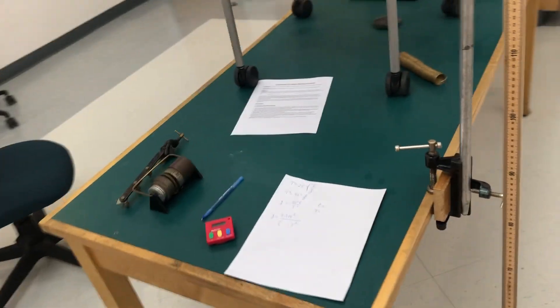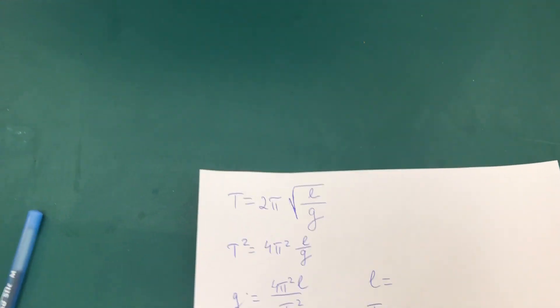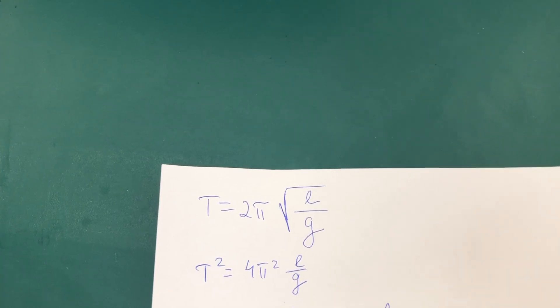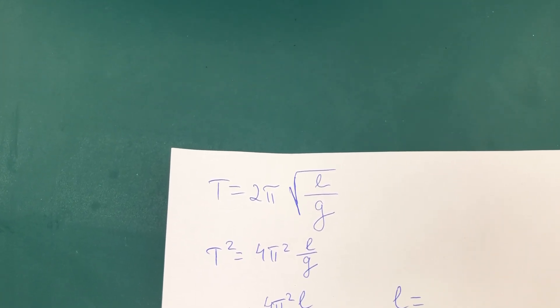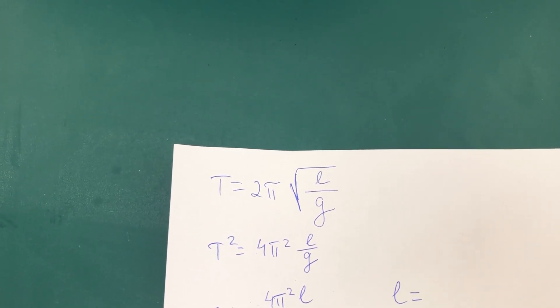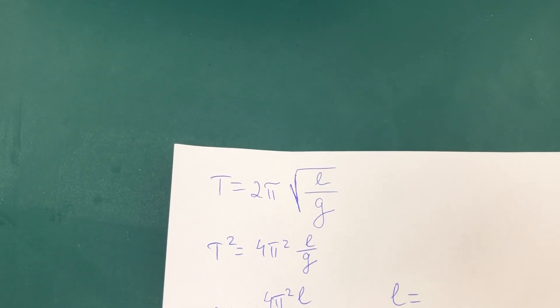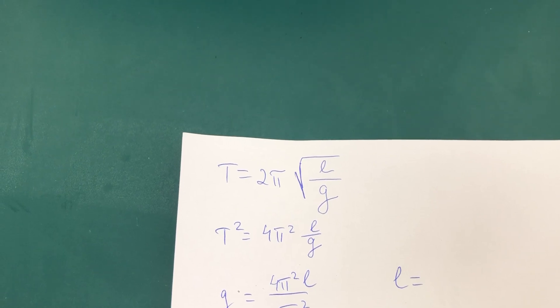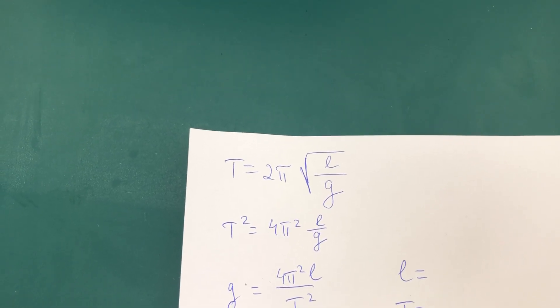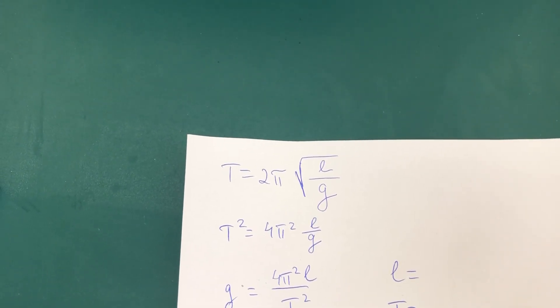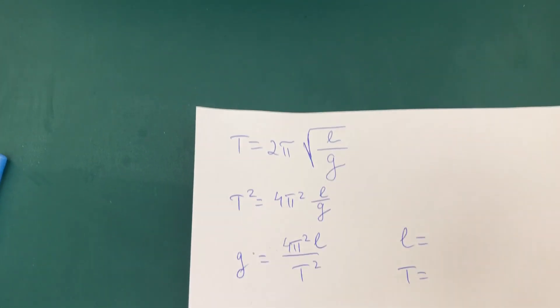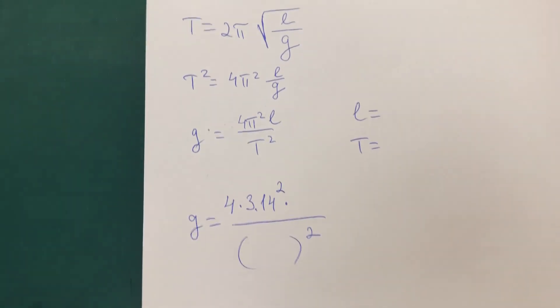So we derived a formula for the period of the simple pendulum which says that the period is 2π times the radical of the length of the pendulum over the freefall acceleration. So if we measure the length and figure out the period, then using simple algebra we can figure out the freefall acceleration.